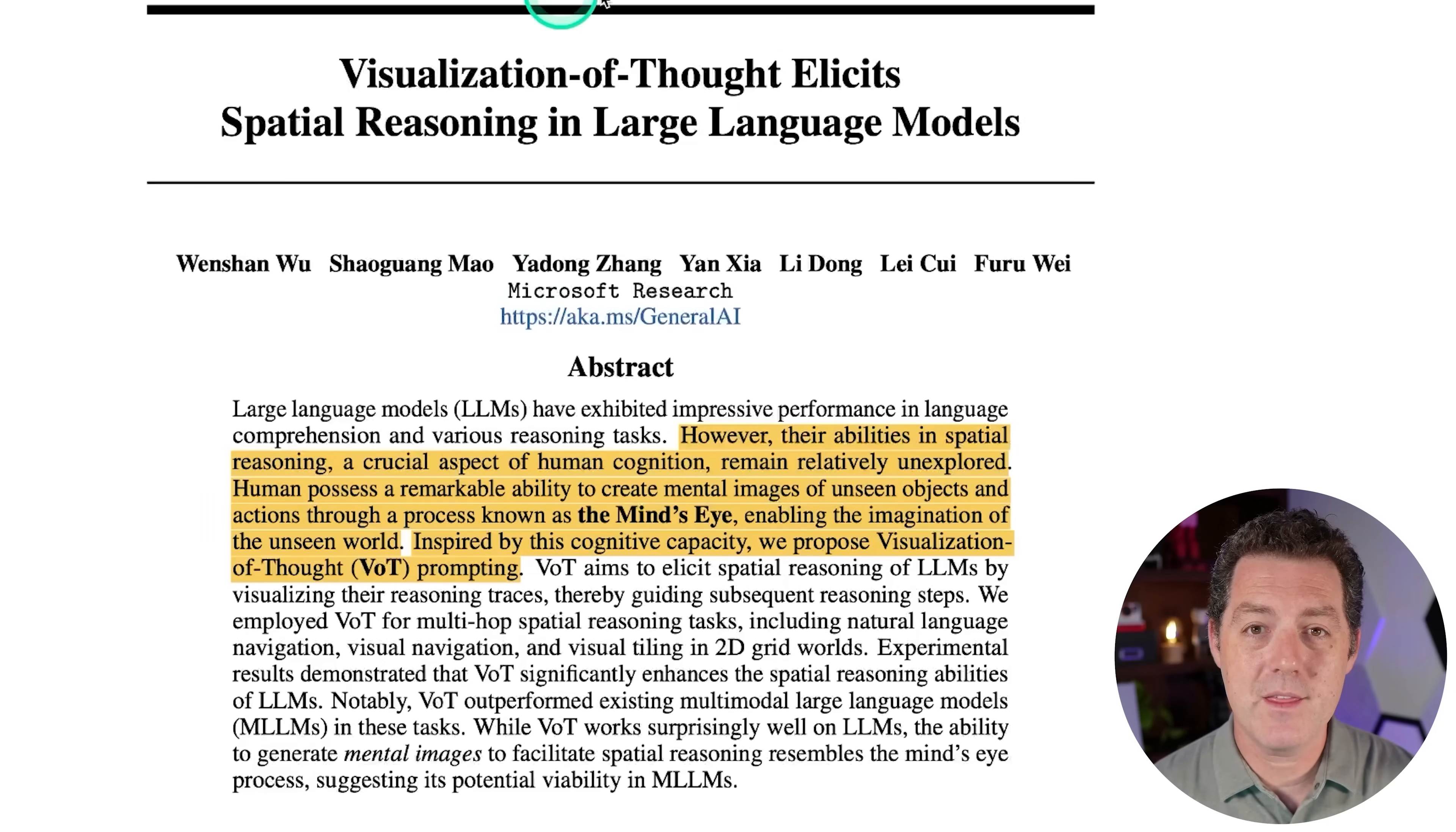So first, let's go over the white paper. This is called Visualization of Thought Elicits Spatial Reasoning in Large Language Models. And essentially what this paper describes is a way to give large language models spatial reasoning. And if you're not familiar with what spatial reasoning means, it's basically just the ability to visualize the relationships in a 3D environment or even a 2D environment between different objects.